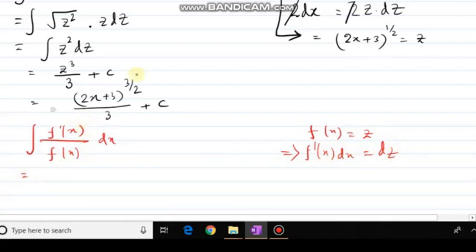And that is equals to dz. So what is my numerator now? Numerator f dash x dx, that is my dz. So this will be dz divided by what is my fx? That is my z, dz by z. So it will be log of z plus c.